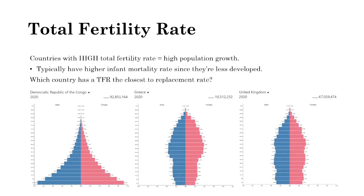Using population pyramids, which country has a total fertility rate closest to the replacement rate? That means the population isn't really increasing or decreasing much.